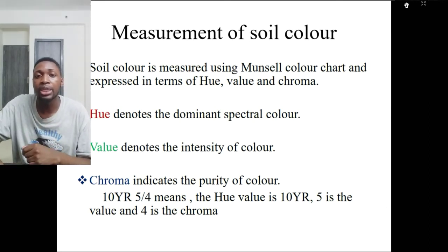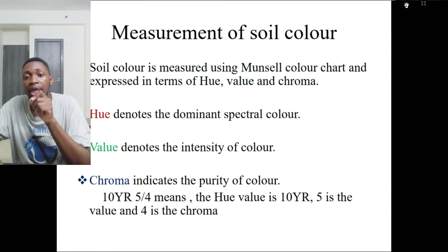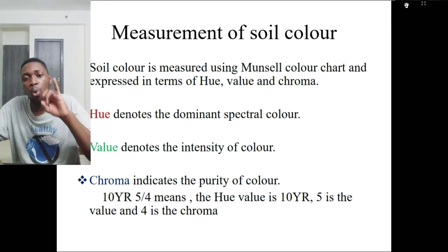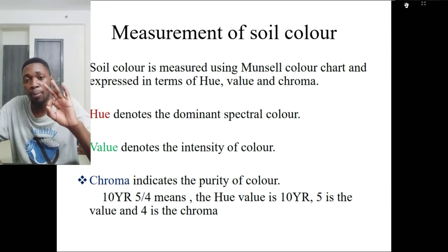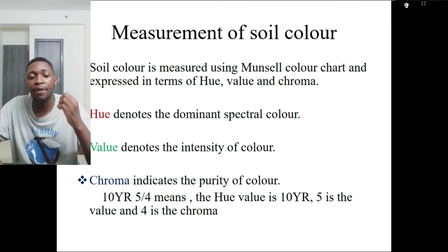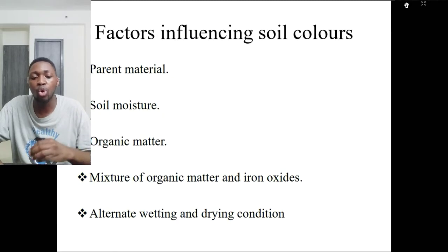Soil color is measured using the Munsell color chart. The Munsell system measures soil color in terms of hue, value, and chroma. Chroma indicates the purity of color.